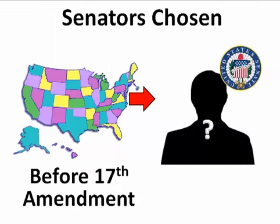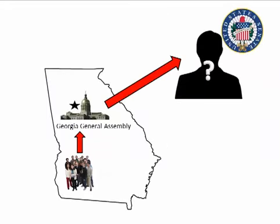So in the original Constitution, all 50 state legislatures would select their two United States senators. Here's how it worked: the people elect the people who go to the Georgia General Assembly — the state legislature — and while in Atlanta, those legislators choose and send two people to the United States Senate. That's how the original Constitution set it up.